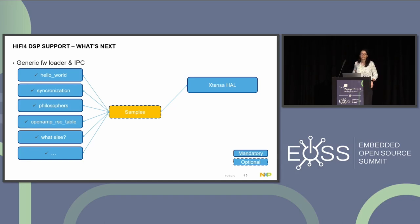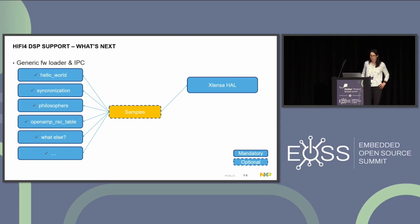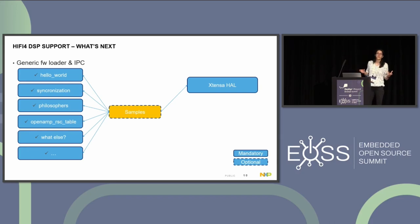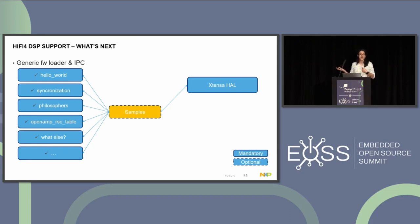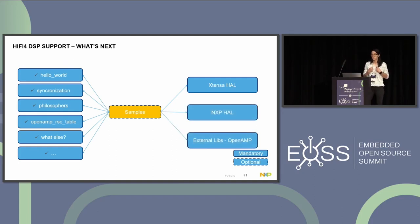We wanted to achieve this by enabling some samples. We started with the simple Hello World. We moved to Synchronization, which demonstrates how the kernel scheduling and timing communication works. Dining Philosophers — we all know it — is a classical multi-thread synchronization problem. For inter-process communication, we enabled the OpenAMP resource table sample, which demonstrates compatibility with Linux running on an application processor and Zephyr on a secondary core. We also want to enable others and are open to suggestions. The Xtensa HAL was already there; we also needed to include the NXP HAL where drivers are implemented, and some external libraries including OpenAMP.